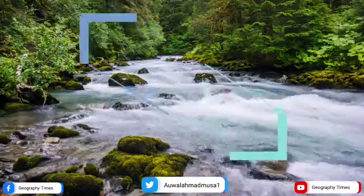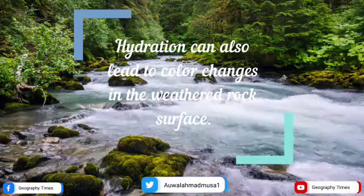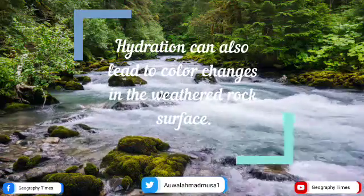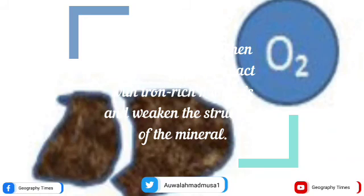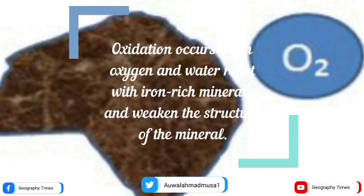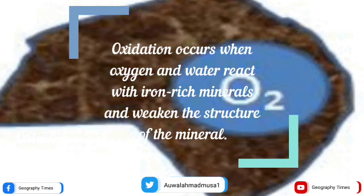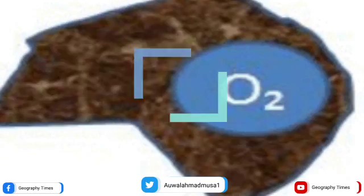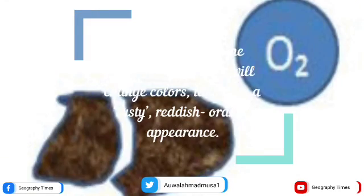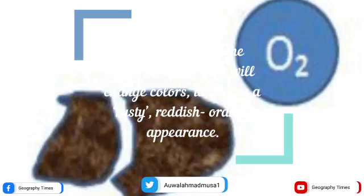Oxidation can also lead to color changes in the weathered rock surface. Oxidation occurs when oxygen and water react with iron-rich minerals and weaken the structure of the mineral. During oxidation the minerals in the rock will change colors, taking on a rusty, reddish-orange appearance.